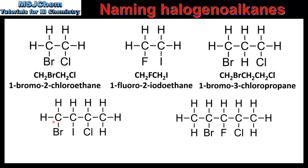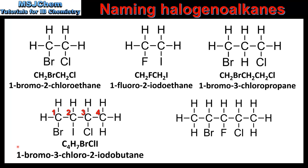In the next compound we have 4 carbon atoms in the longest chain with one carbon atom bonded to a bromine atom, another bonded to an iodine atom, and another bonded to a chlorine atom. There are two things to consider: the alphabetical order of the halogen atoms and using the lowest possible numbers for their positions. Numbering from one end gives 4-bromo-2-chloro-3-iodobutane, and from the other end gives 1-bromo-3-chloro-2-iodobutane. The correct name is 1-bromo-3-chloro-2-iodobutane as it gives the lowest possible numbers.